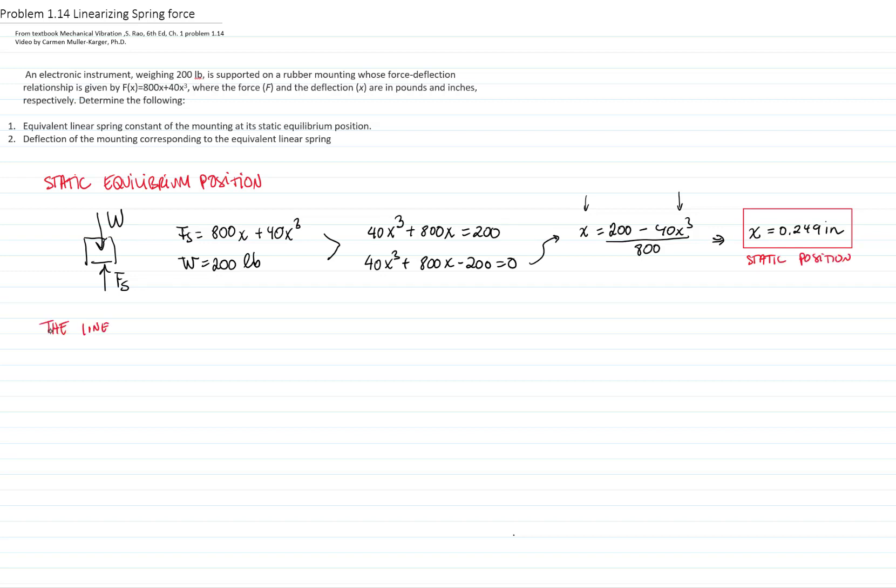The linearized constant of the spring is given by the derivative of the force with respect to x, evaluated at that equilibrium position. So let's call this the equilibrium position. That will be then equals to 800 plus 120x squared, all that evaluated at our equilibrium position that we found, 0.249.